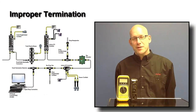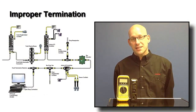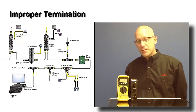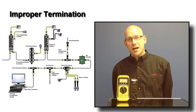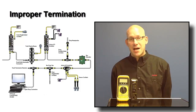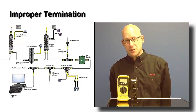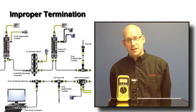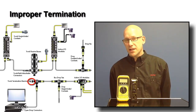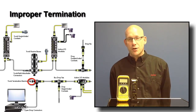Item number three on the DeviceNet problems list is improper termination. Both meters will be checking the CAN high-low differential readings for the dominant and recessive state of the CAN high and the CAN low signal, which is an indicator of a problem with a terminating resistor, either missing or not working properly.